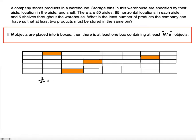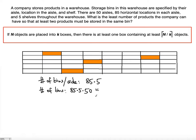The total number of bins per aisle is 85 times 5. So the total number of bins in the entire warehouse is 85 multiplied by 5 multiplied by the total number of aisles, which is 50. And this equals 21,250. So we know the total number of bins in this warehouse is 21,250, which means we know the K value — K is 21,250.